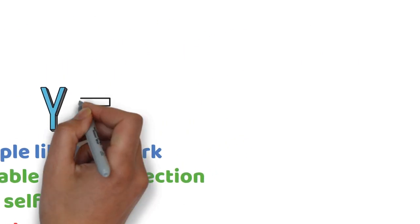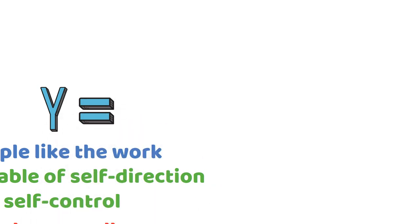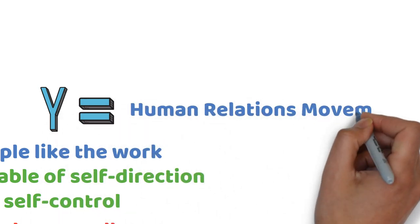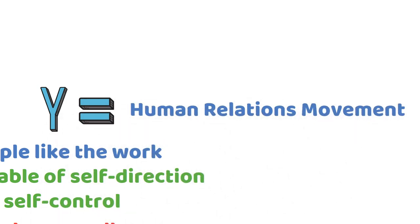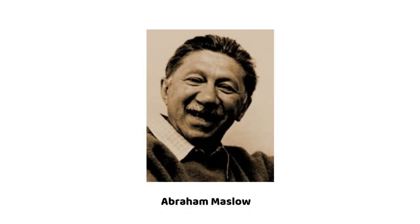Theory Y shared similarities with the human relations movement. Thus, both theories propose different human behaviors. An American psychologist, Abraham Maslow, developed a theory of hierarchical needs, which McGregor referred to in his book to indicate employee incentives to perform well.